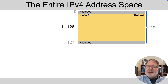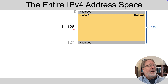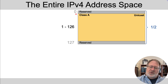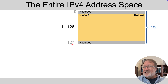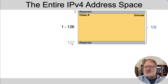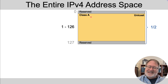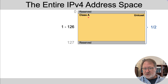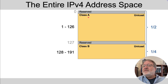If the number begins between 1 and 126 in the first octet of an IPv4 address, it's part of Class A. All those that begin with 0 and 127 are reserved. That's about half of the IPv4 address space taken up by unicast addresses in Class A. Unicast means the addresses are used by one host rather than multiple — for instance, with multicast.